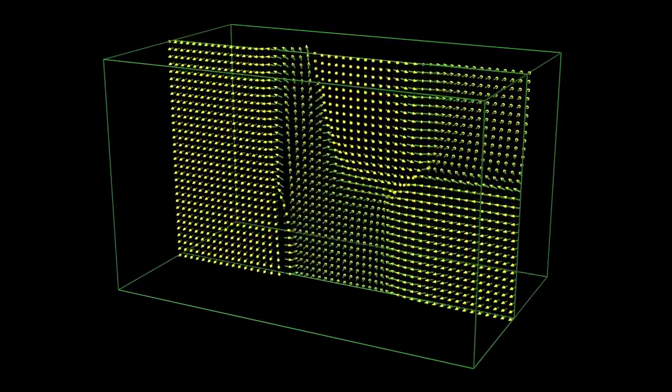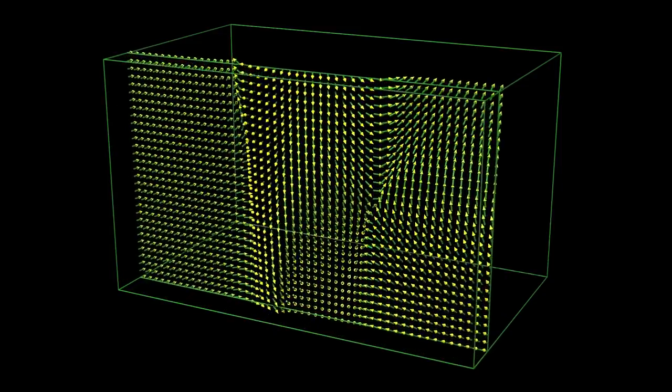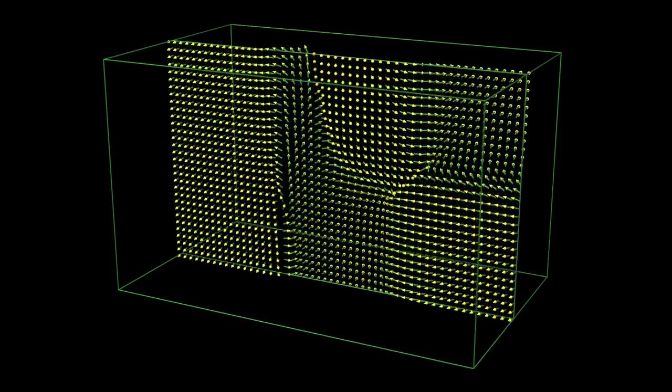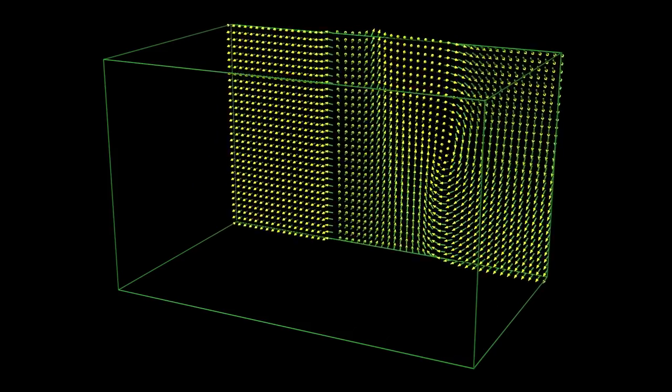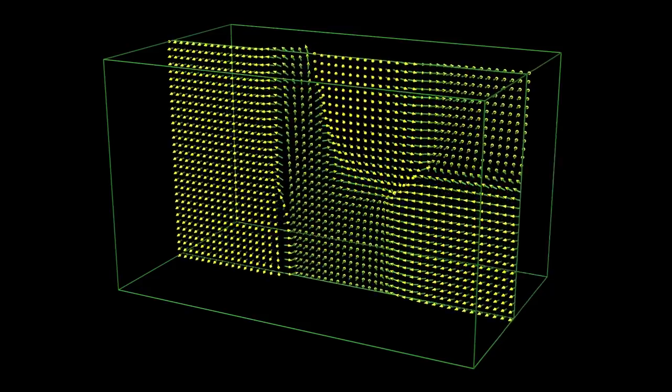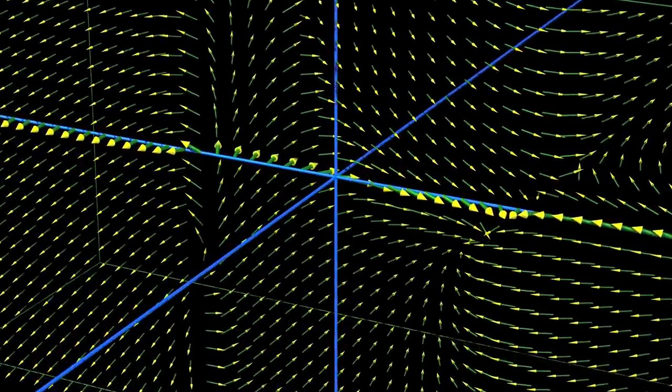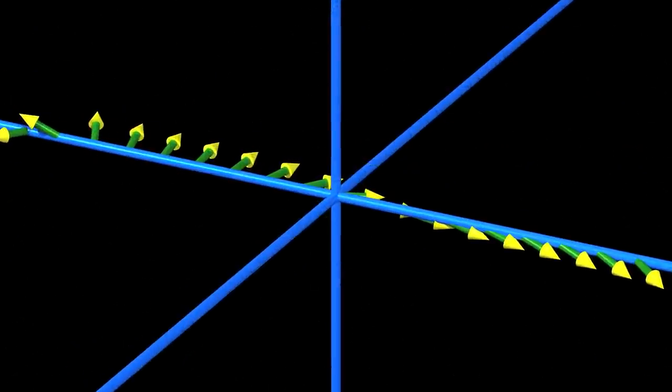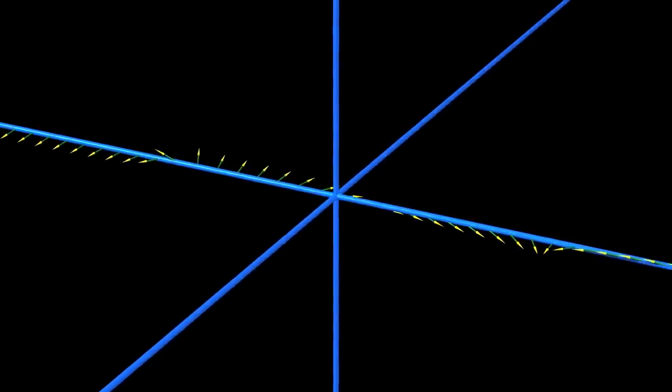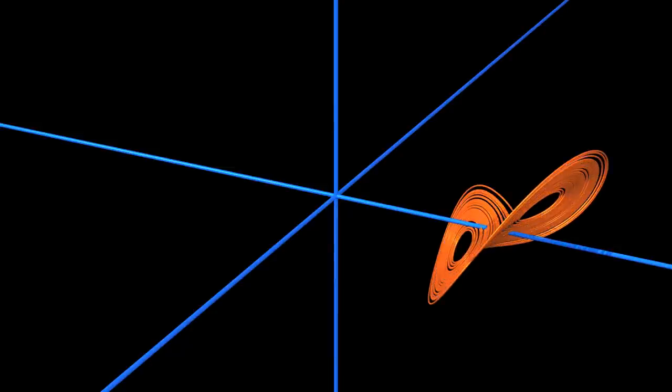Again, we must temper our enthusiasm. Watch this vector field. Here is a trajectory. All is well. It accumulates on a butterfly, as we have seen before.